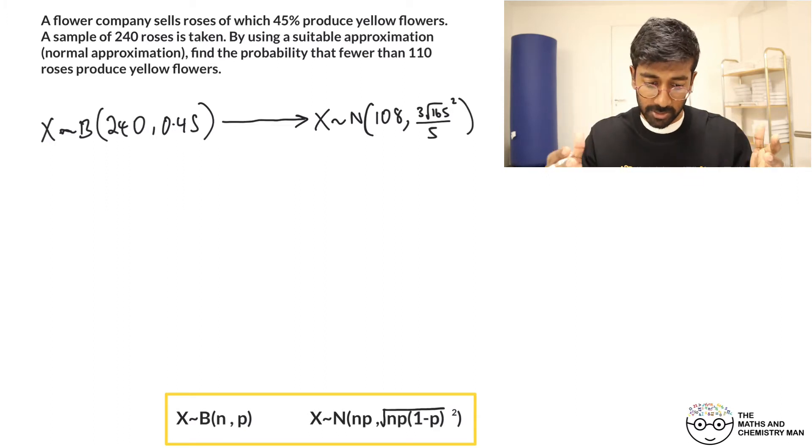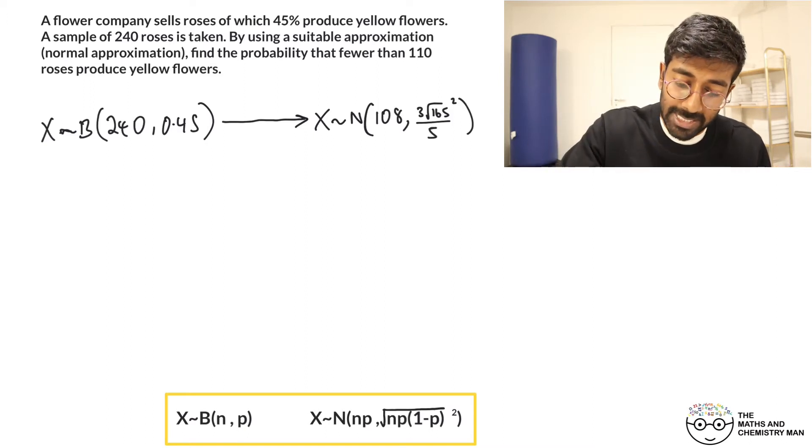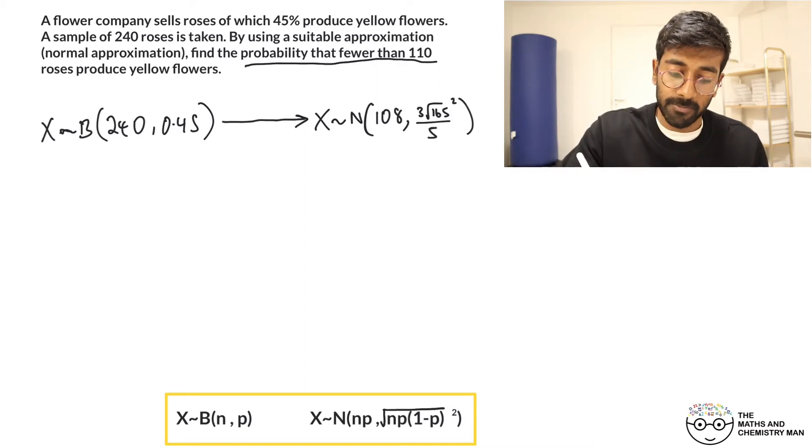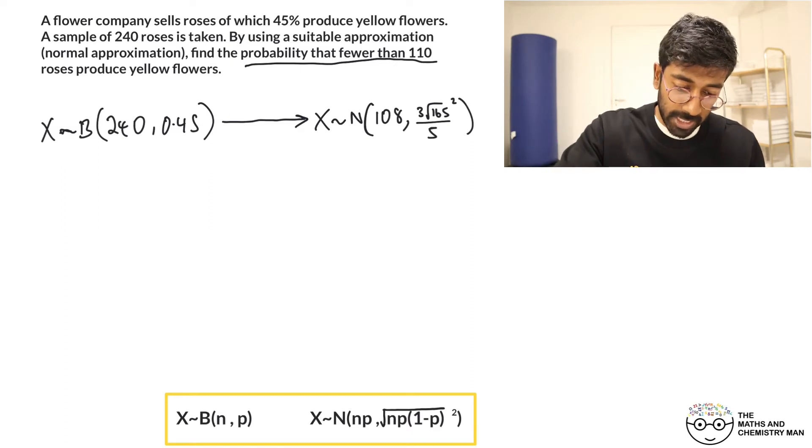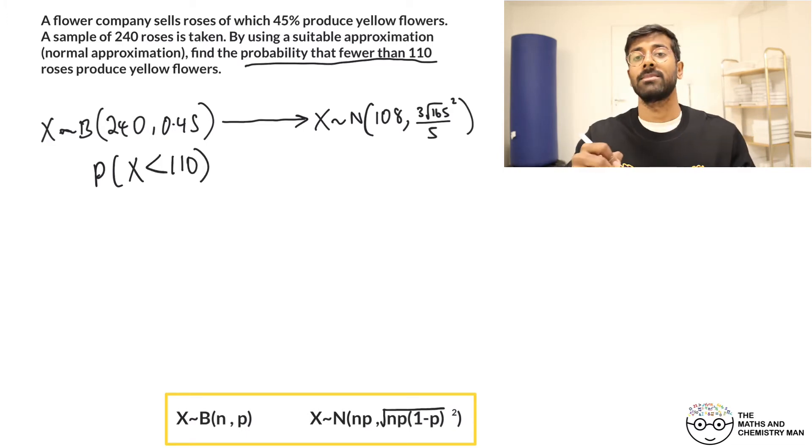So we've laid this all out. This is the foundation of solving one of these problems. Now what do we need to look for? Well, we need to look for the probability that fewer than 110 roses produce yellow flowers. So we're looking for the probability that X is less than 110.